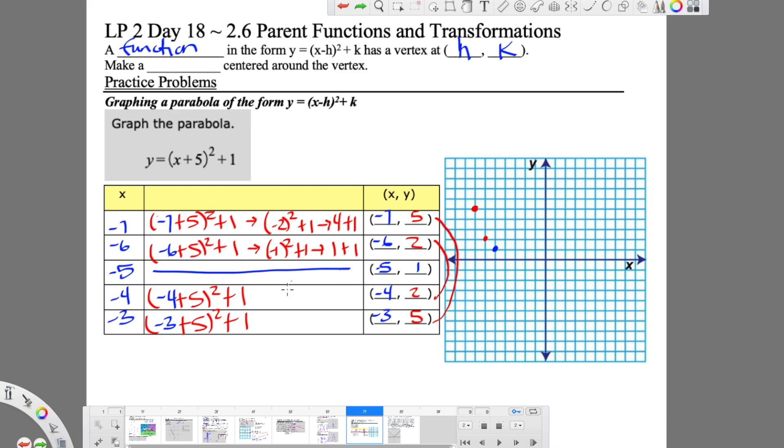So we're going to go negative 4 plus 5. Well, that's 1 squared plus 1. 1 squared is 1, 1 plus 1 is 2. So yay, that worked. And then we have negative 3 plus 5. Well, that's 2 squared plus 1. 2 squared is 4, and 4 plus 1 is 5.